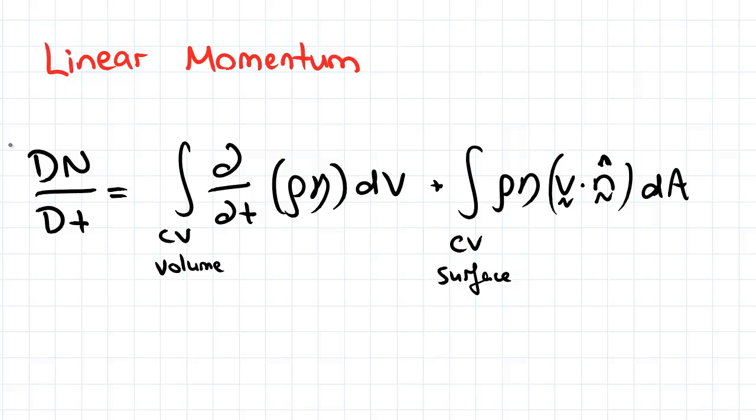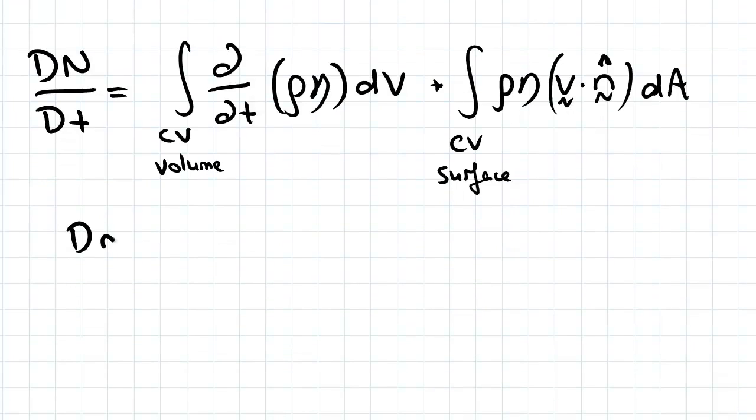Now we're going to be looking at n equal to mv. So that's any property n equal to the linear momentum. On the left hand side we'll have dmv on dt. So I'm going to just sub in for each term to derive our linear momentum equation.